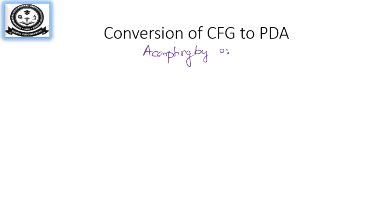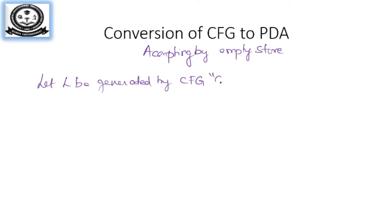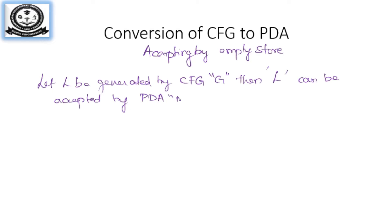We will see the conversion of context-free grammar into a PDA using accepting by empty store. Empty store is nothing but empty stack. Let L be the language generated by the context-free grammar G. Then the language L can be accepted by PDA by accepting by empty store.